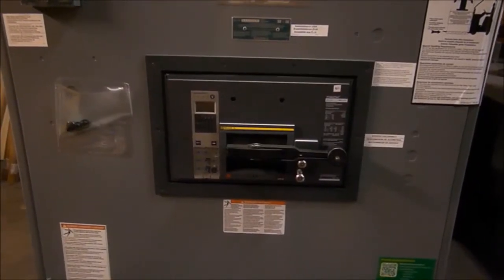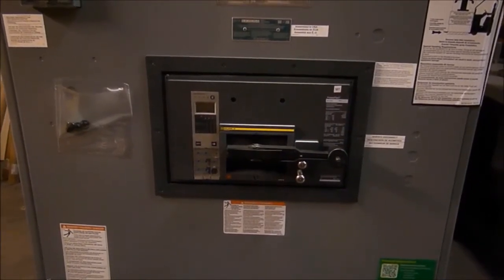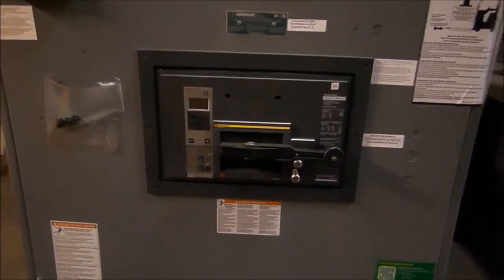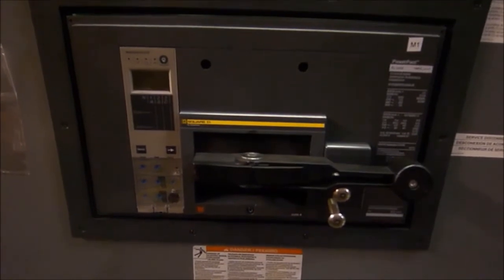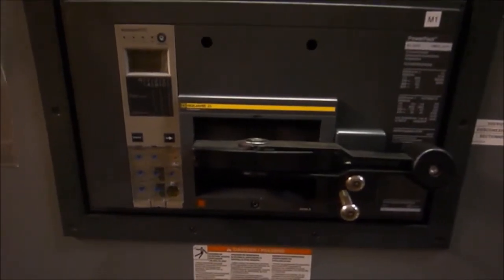This is the front panel of a 2000 amp main breaker switchboard by Square D Schneider Electric. This switchboard uses a 2000 amp RL series circuit breaker using an electronic trip unit visible on the left.